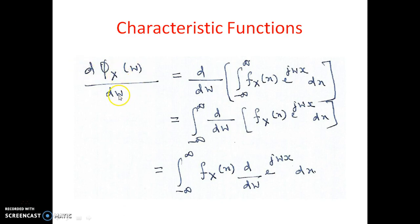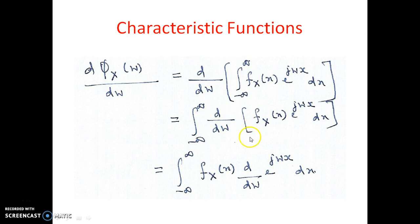The derivative d phi_x(omega) / d omega equals d/d omega of the integral from minus infinity to infinity of f_x(x) e^{j omega x} dx. Since d/d omega can be taken inside the integral — because the derivative is with respect to omega while the integration is with respect to x — this becomes the integral of f_x(x) times d/d omega of e^{j omega x} dx, noting that f_x is constant with respect to the derivative and omega appears only in e^{j omega x}.